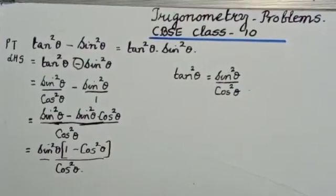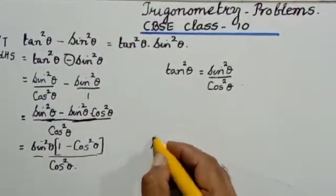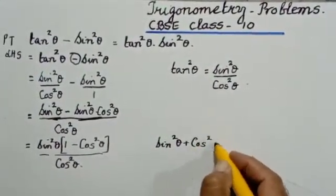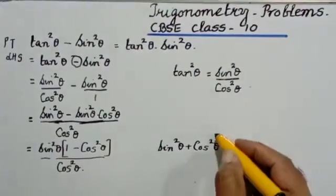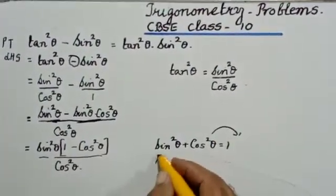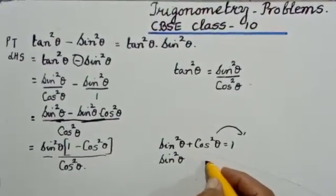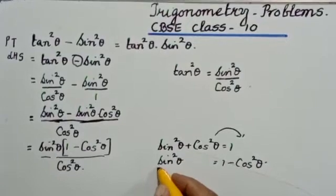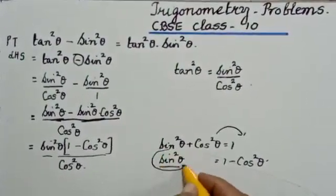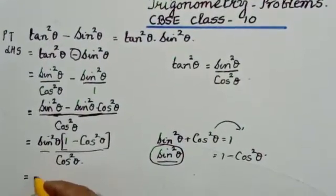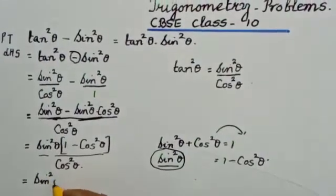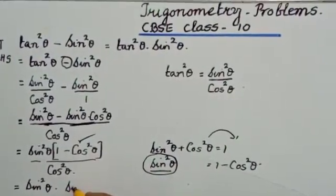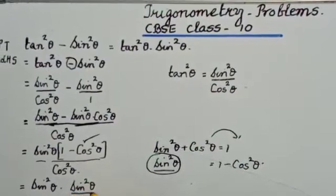I hope you have followed all the steps. Now, by the first trigonometric identity, sin squared theta plus cos squared theta is equal to 1. So if I transfer cos squared theta, sin squared theta will be equal to 1 minus cos squared theta. So instead of 1 minus cos squared theta, I can substitute it as sin squared theta. I will have sin squared theta divided by cos squared theta.